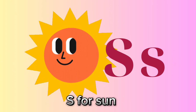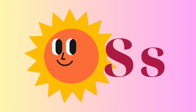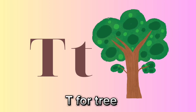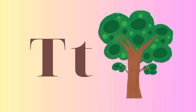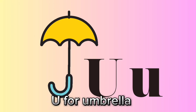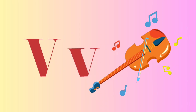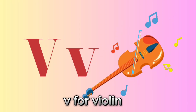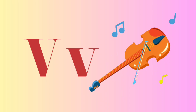S for sun. T for tree. U for umbrella. V for violin.